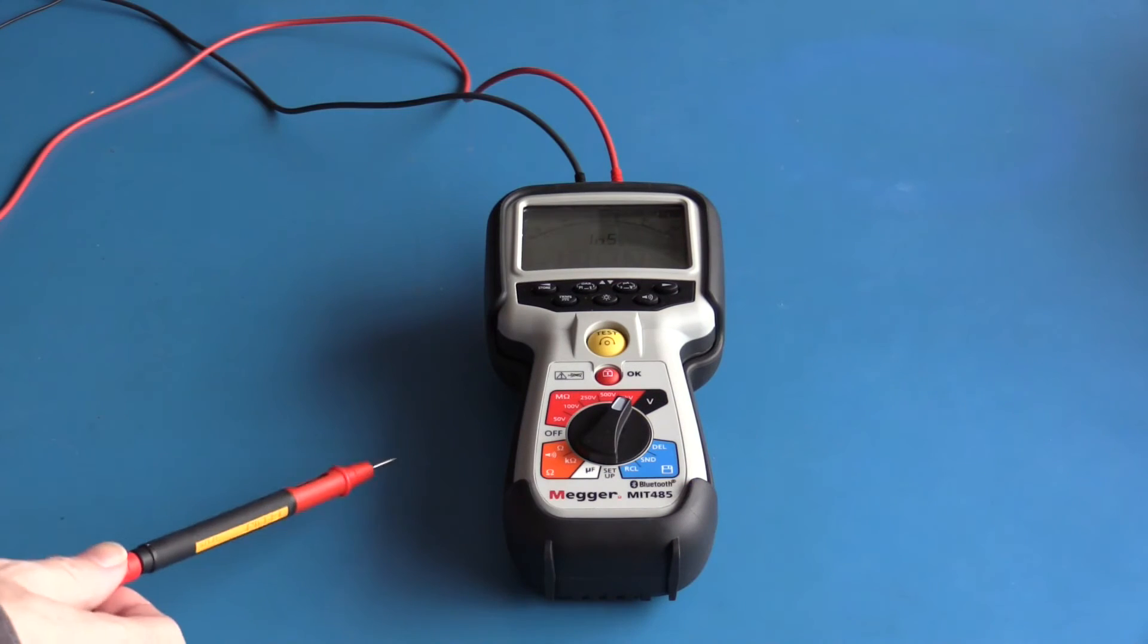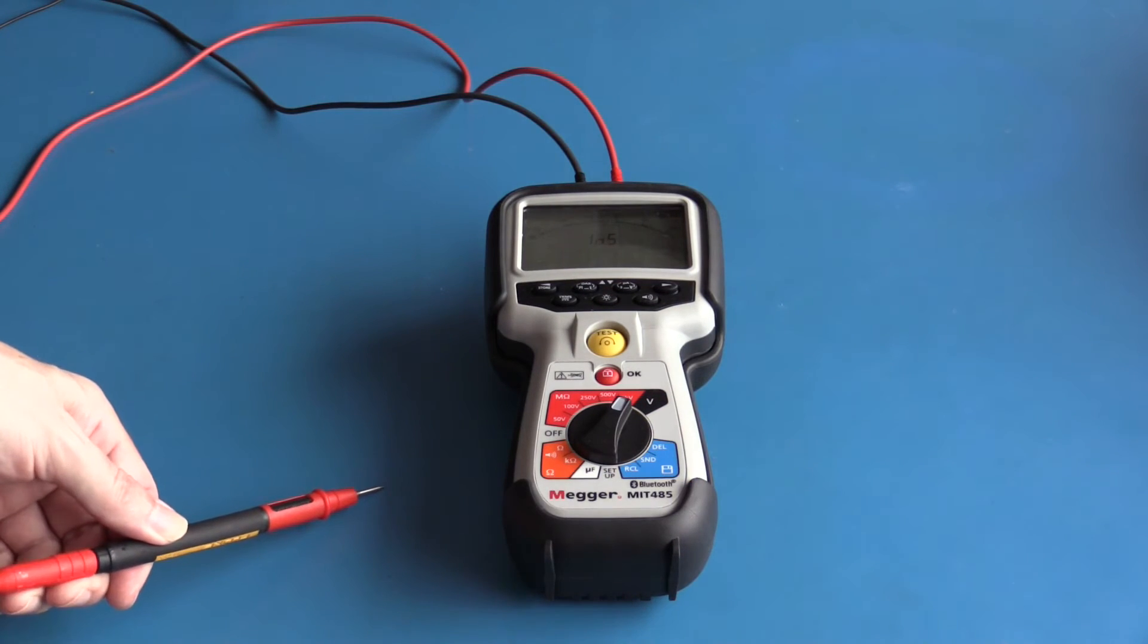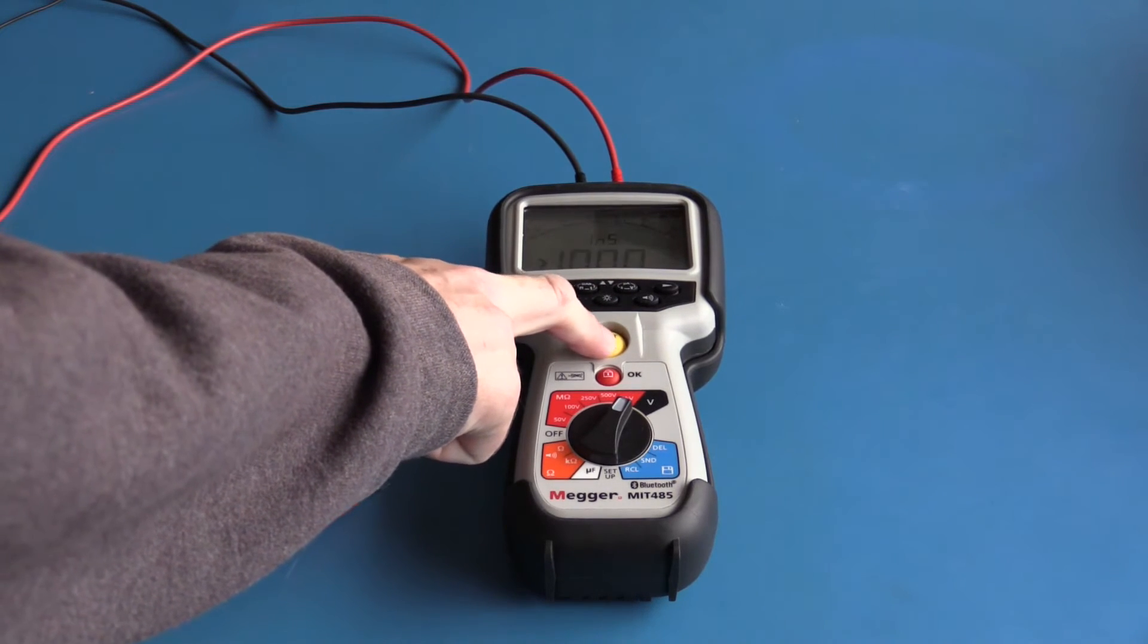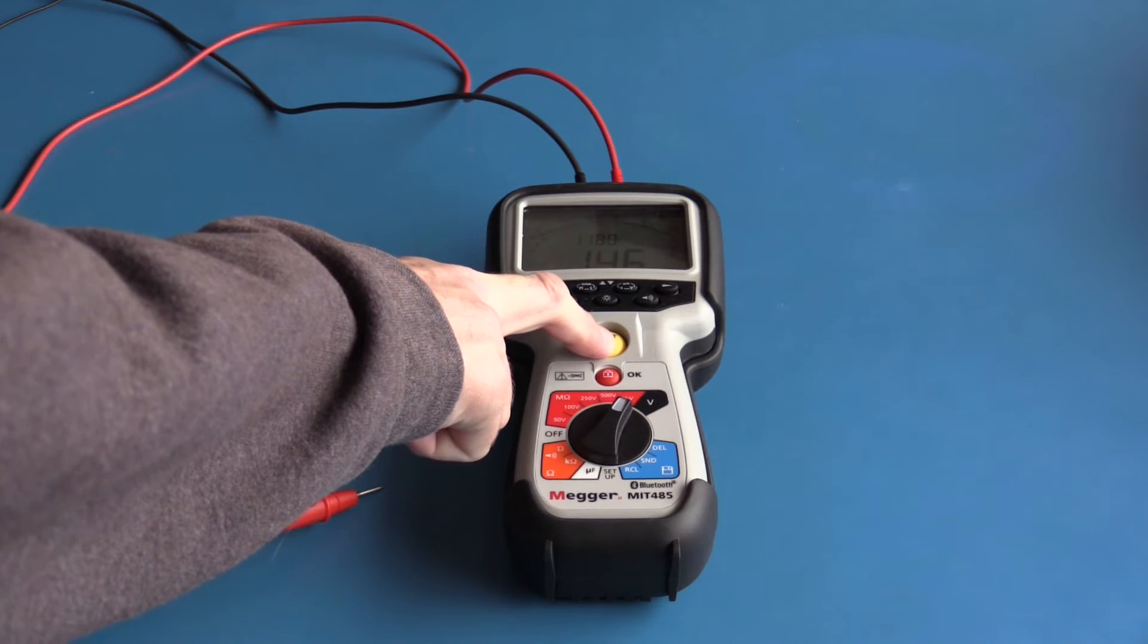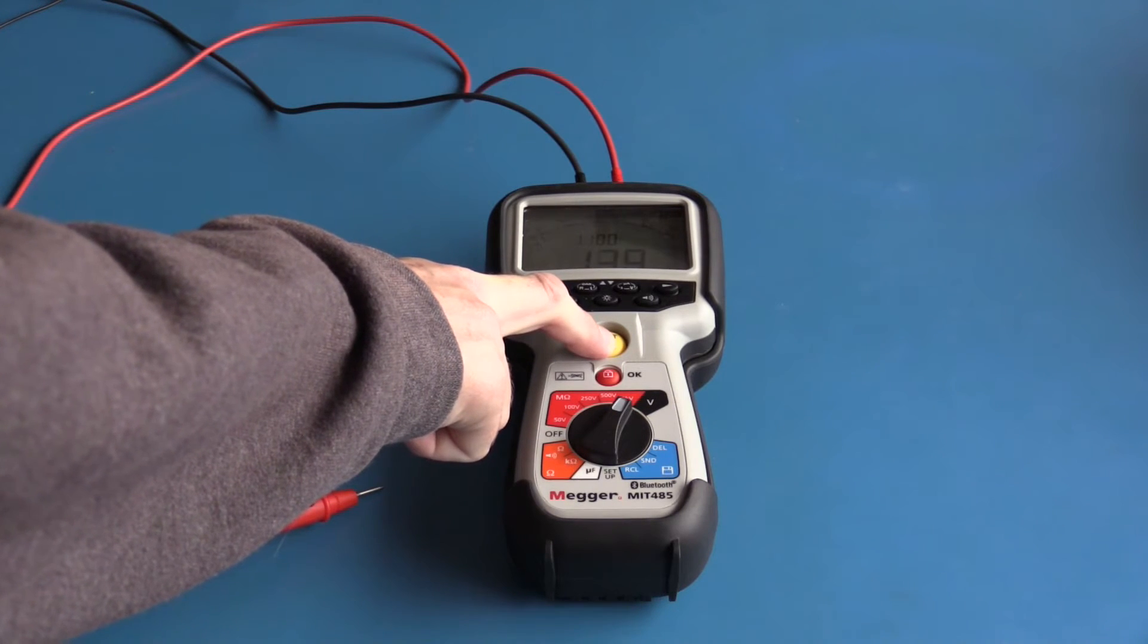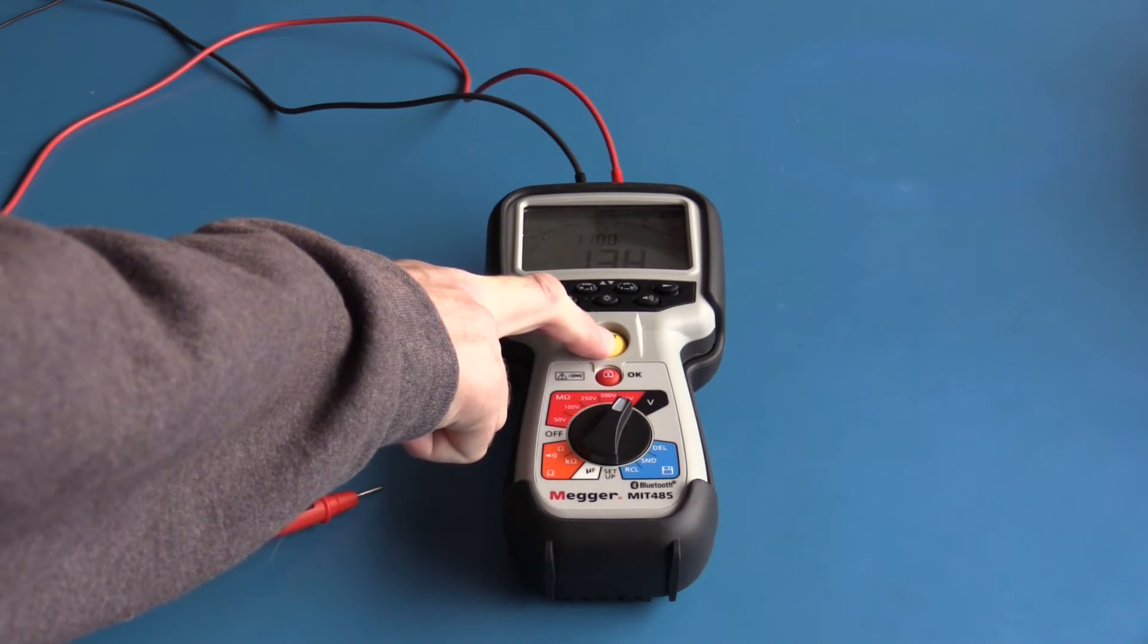Using that same 1000 volt test voltage, I'm going to check to make sure my bench, which has a static dissipative mat, does actually have a path to ground. I do not have the equipment necessary to test the resistive properties of this ESD mat.